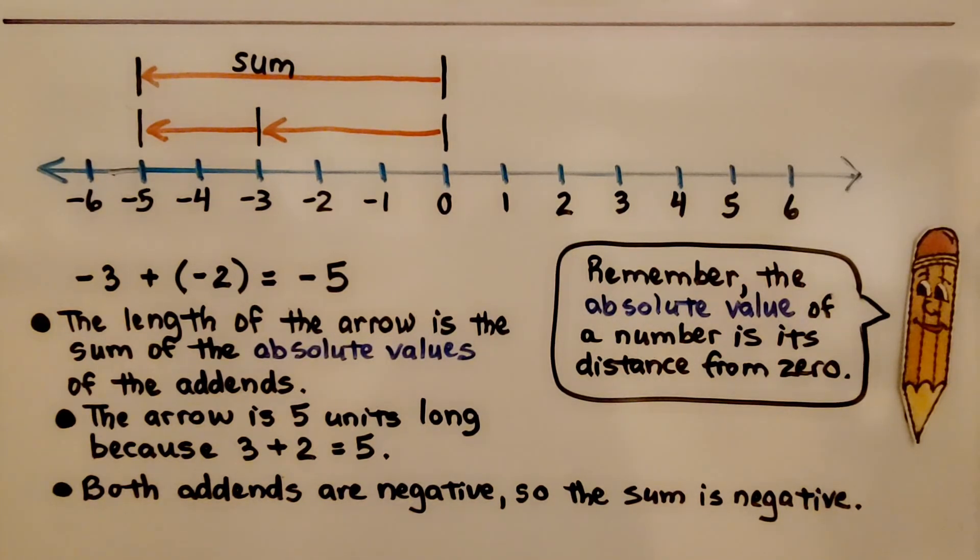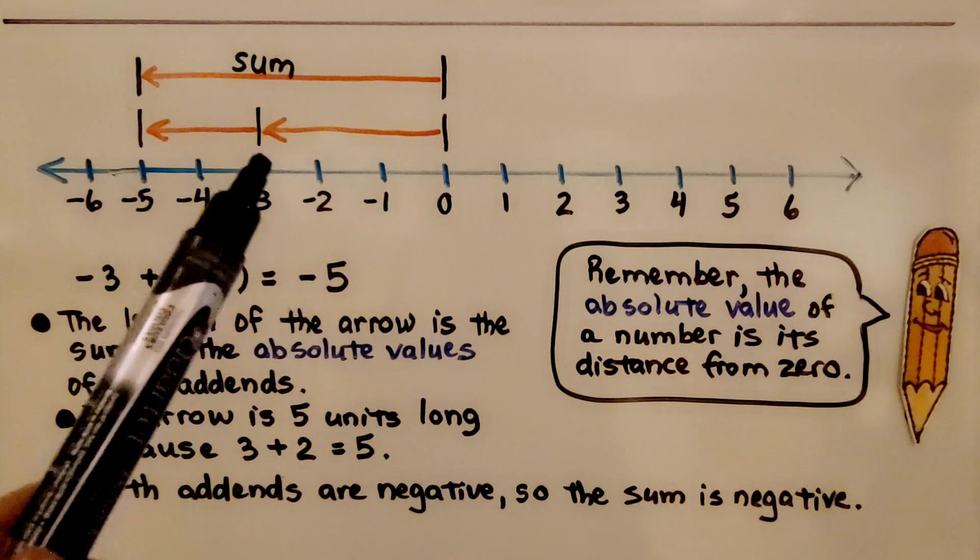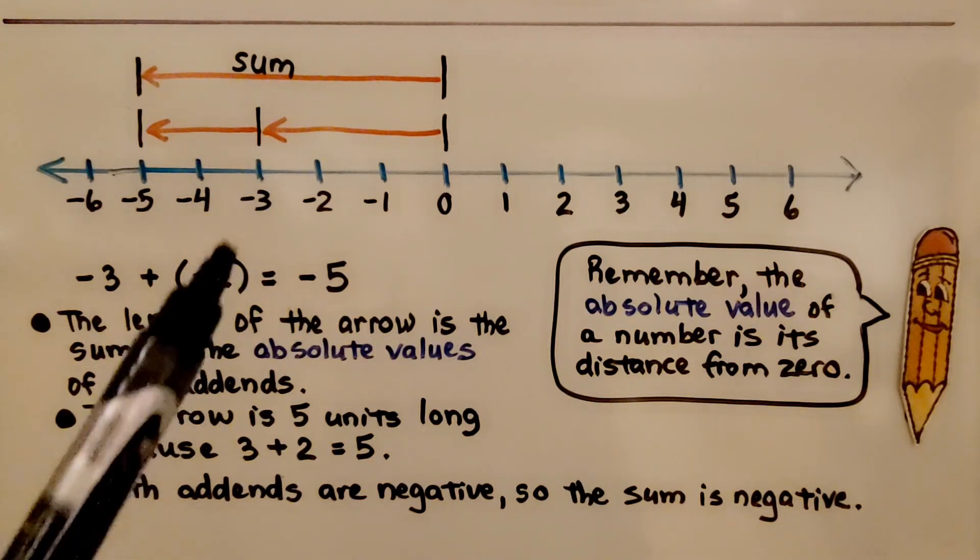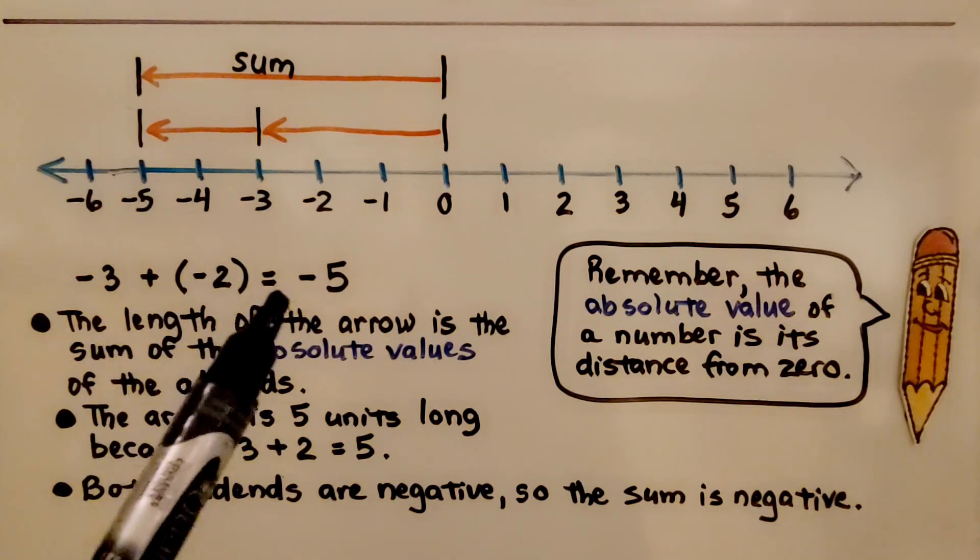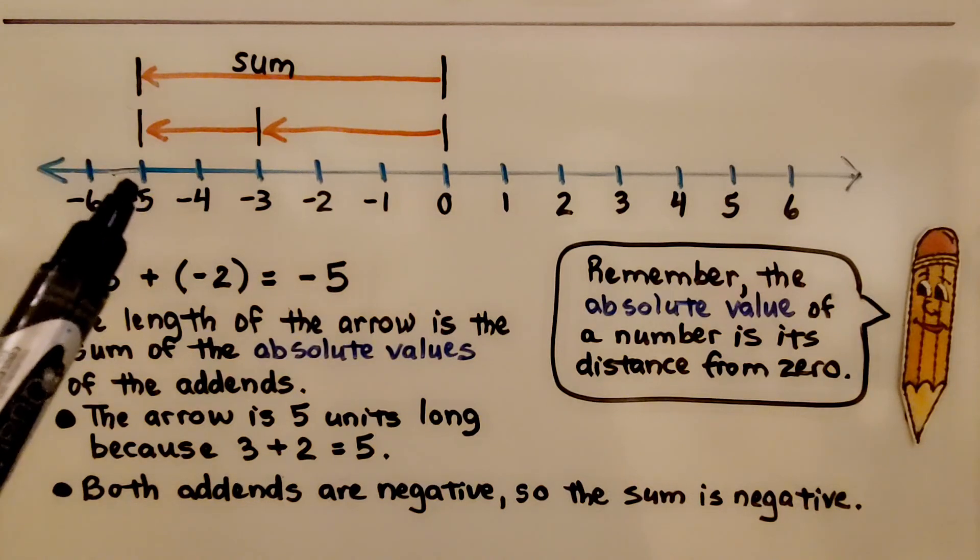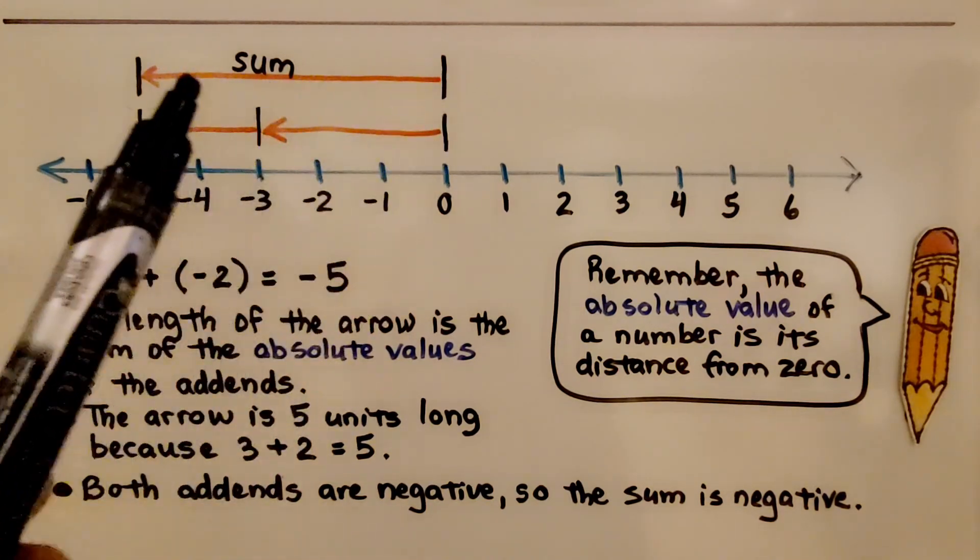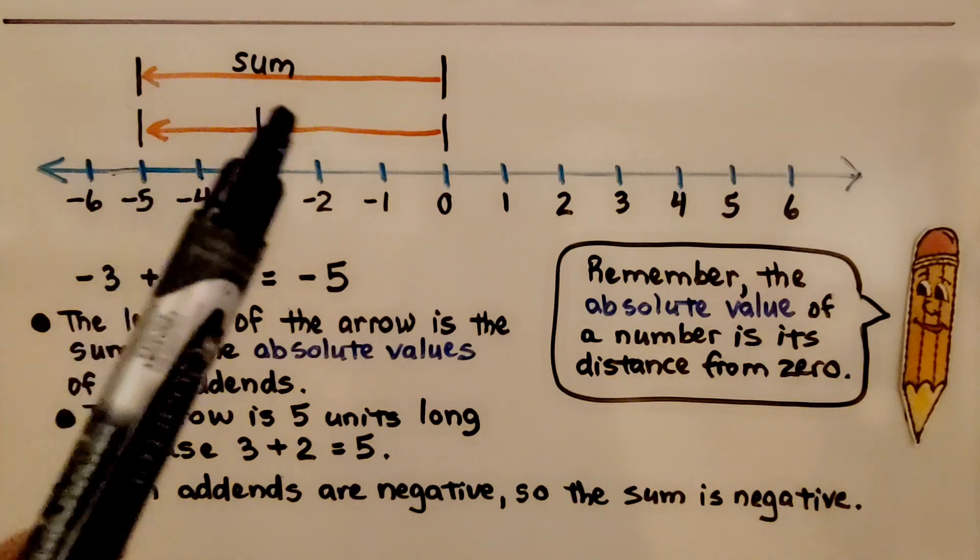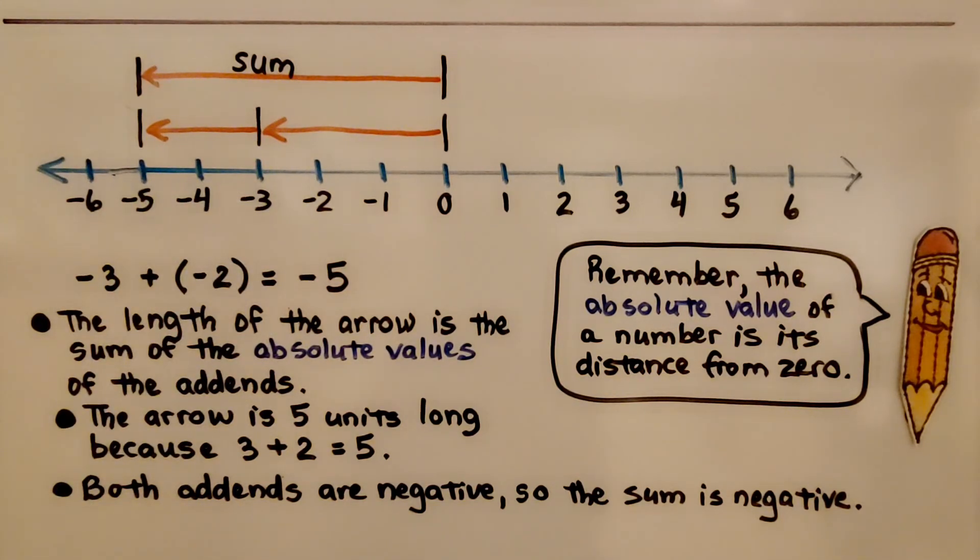The number line is showing negative three plus negative two is equal to negative five. This one long arrow is the sum of these addends. The length of the arrow is the sum of the absolute values of the addends. The arrow is five units long because three plus two is equal to five. Both addends are negative, so the sum is negative.